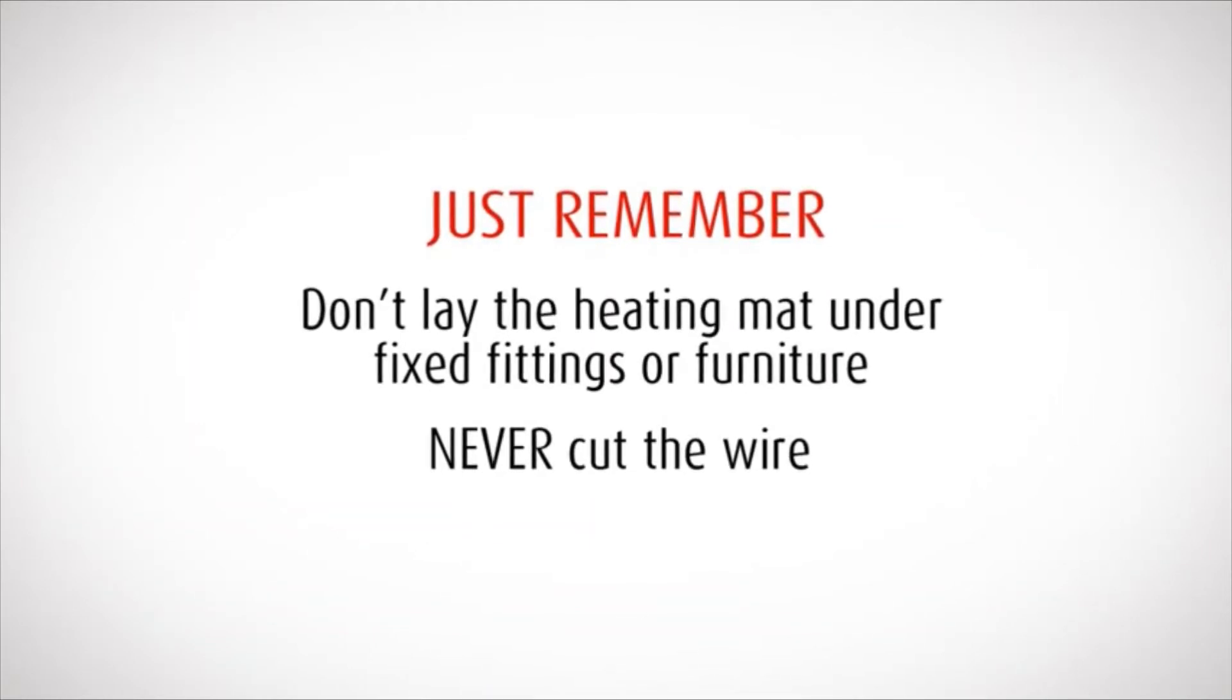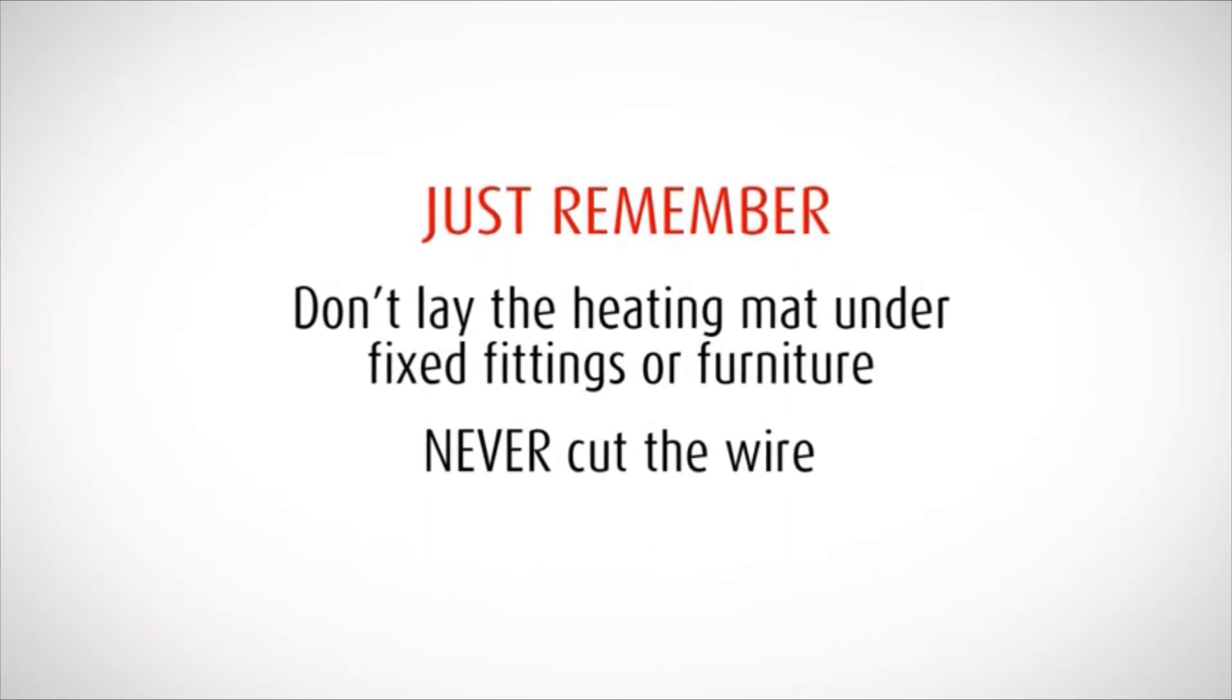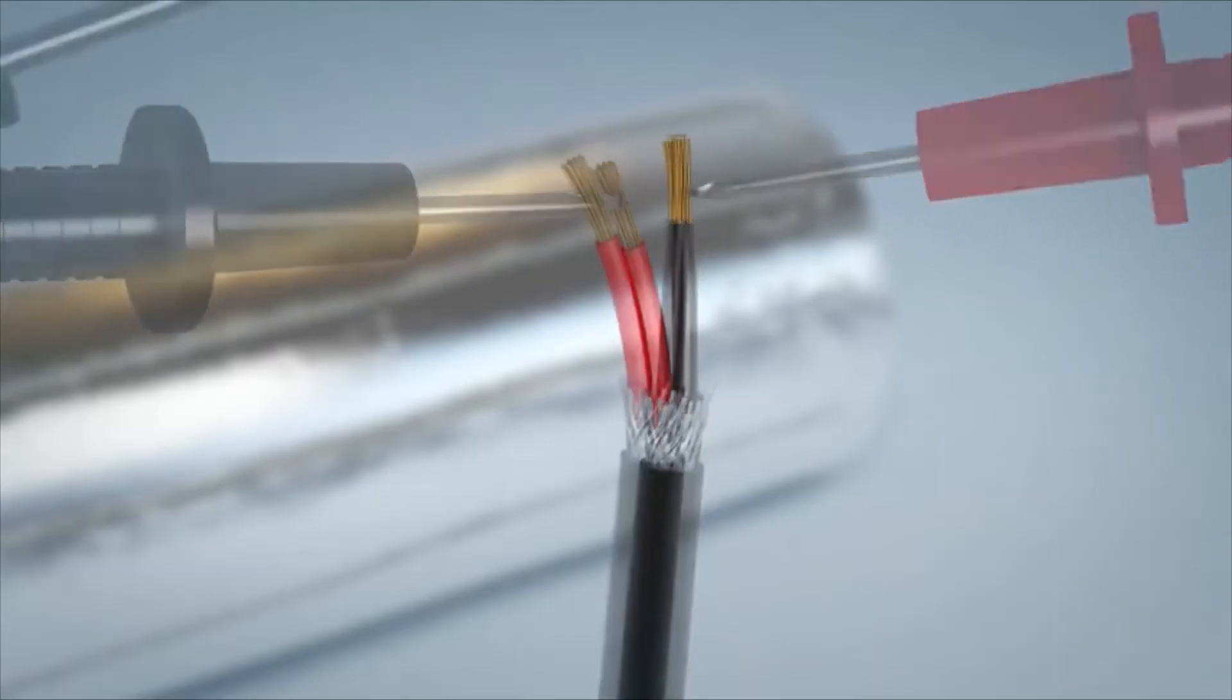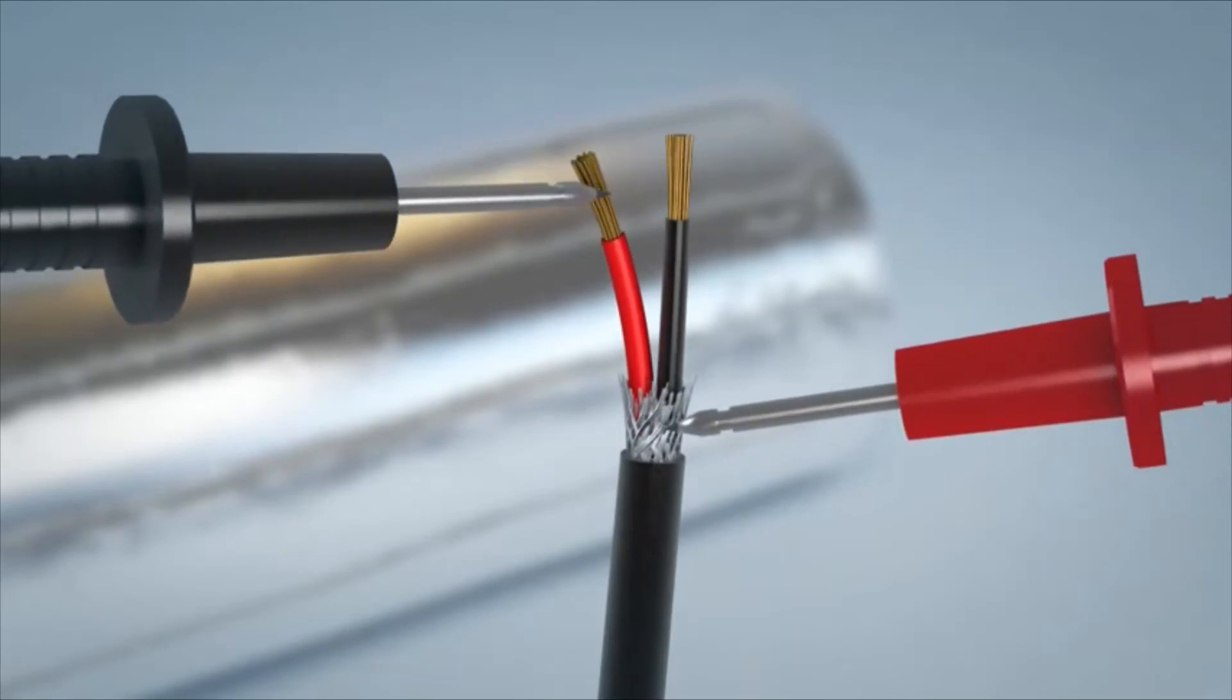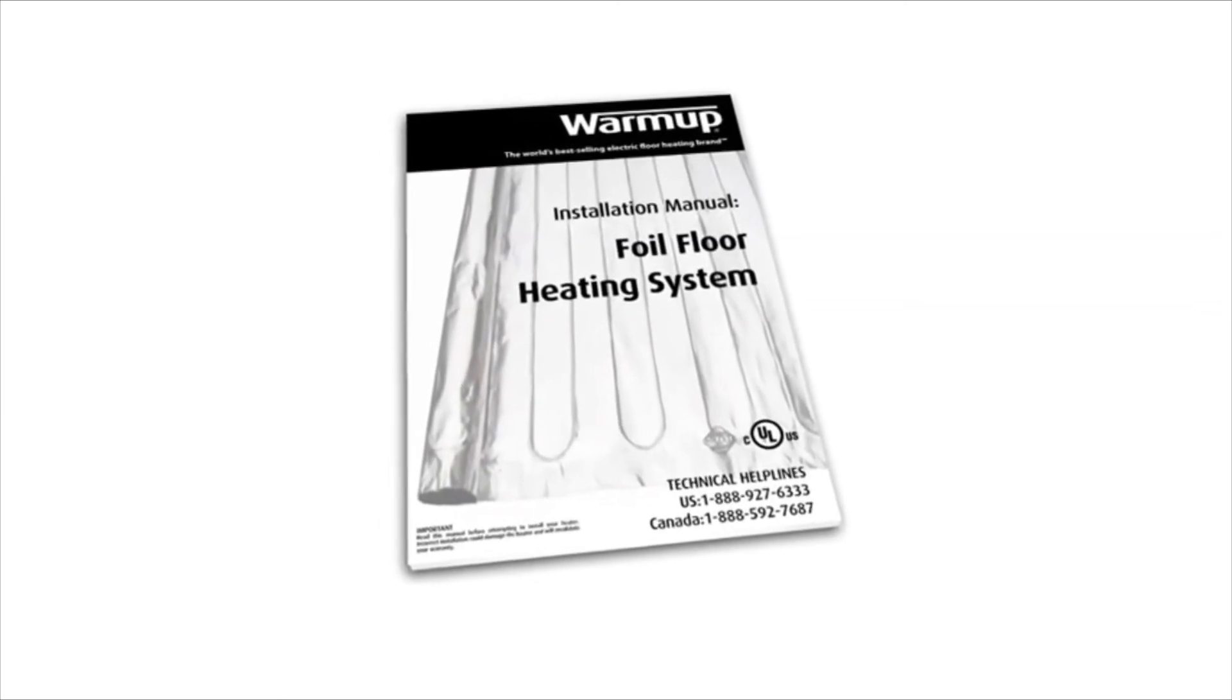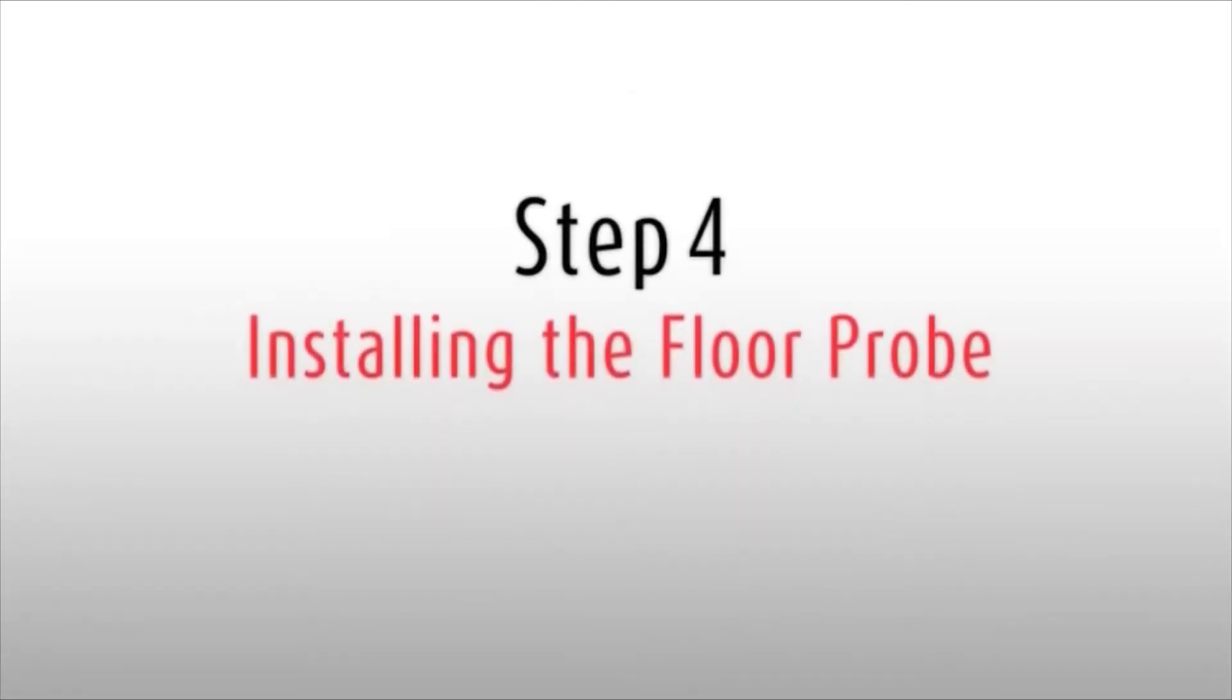Remember to not lay the foil heating mat under fixed fittings or furniture and never cut the heating wire. Perform another multimeter test to check that the heating mat has not been damaged and make a note of your reading in the Warmup installation manual. If your reading has changed, call Warmup immediately. Do not continue working.